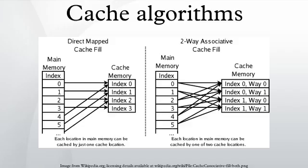So many CPU designers choose a PLRU algorithm which only needs one bit per cache item to work. PLRU typically has a slightly worse miss ratio, has a slightly better latency, and uses slightly less power than LRU.